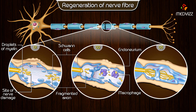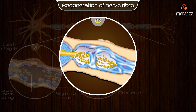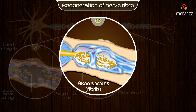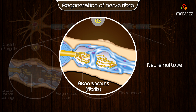Stages of regeneration: first, some pseudopodia-like extensions grow from the proximal cut end of the nerve. These extensions are called fibrils or regenerative sprouts. The number of fibrils is up to 100. The fibrils move towards the distal cut end of the nerve fiber.